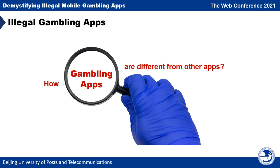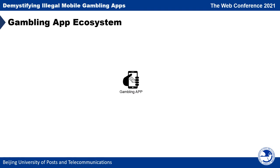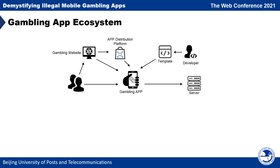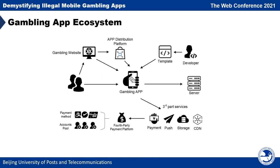So under strict regulations, illegal gambling apps are different from other apps. To understand the ecosystem of illegal gambling apps, we first conduct a preliminary study to understand the major players. The first part is the corresponding gambling websites where you can download gambling apps. There are also unique distribution platforms for downloading. Developers usually create a number of gambling apps with templates, connected to different web servers, because these servers would be blocked from time to time. Many third-party services like payment services are also widely used.